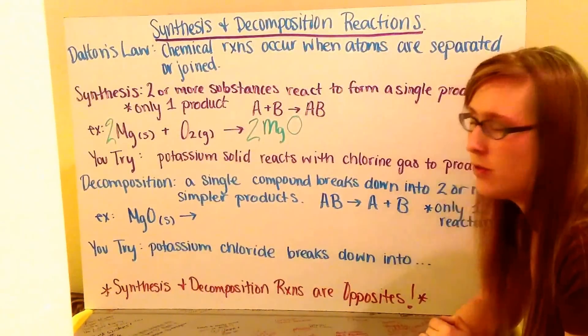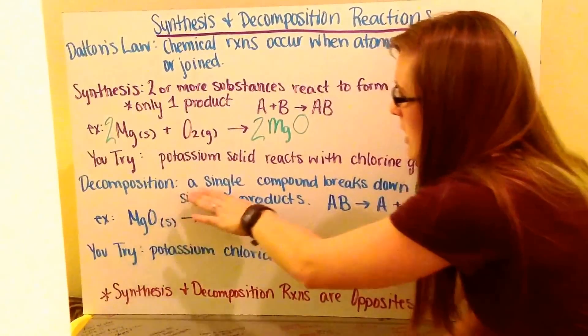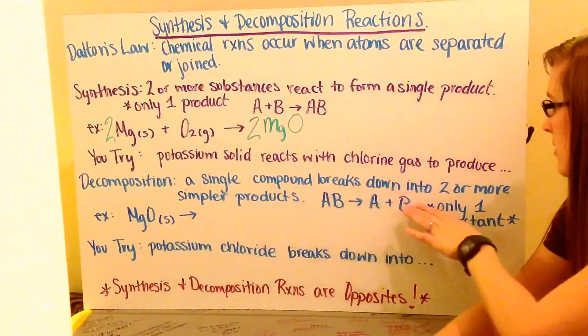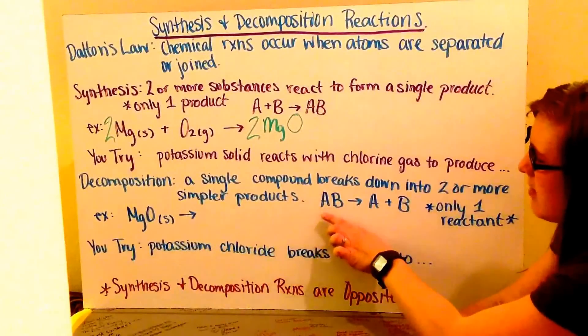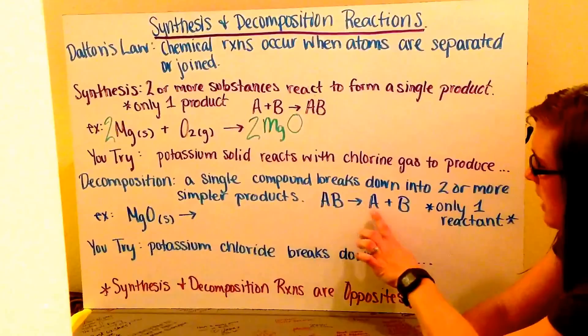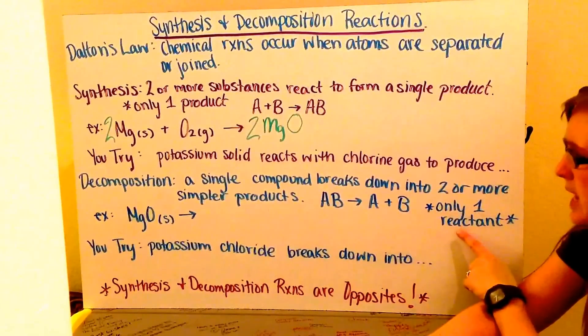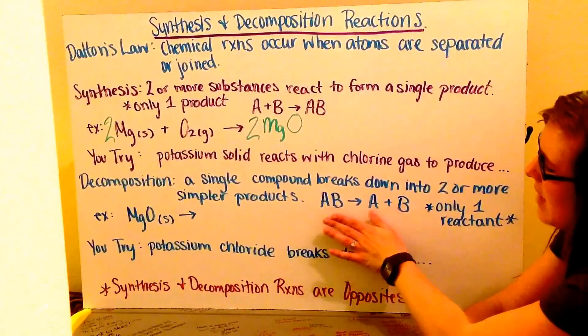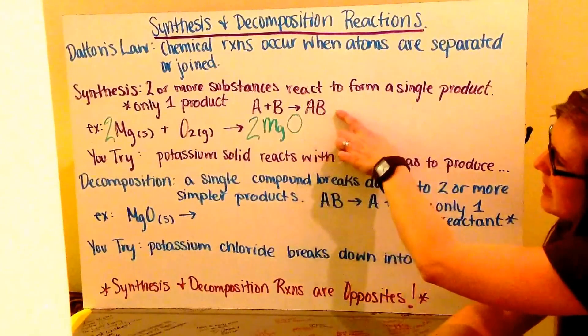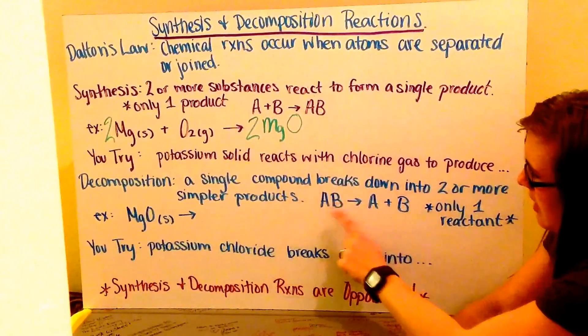Our second type of reaction are decomposition reactions. Here, a single compound breaks down into two or more simpler products. So I have AB breaking down into A plus B. Notice that in these reactions, I only have one reactant, in this case AB. Also notice that it's the opposite basic format of my synthesis reaction. Here I'm making AB and here I'm breaking it down.